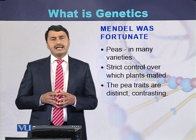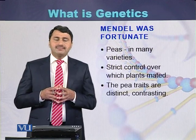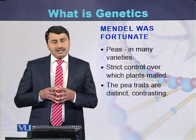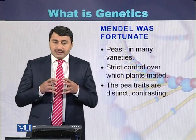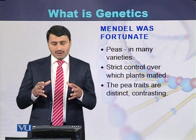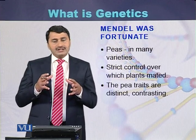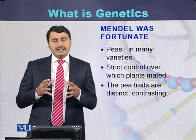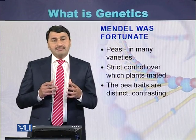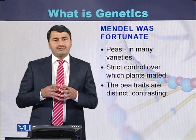It is said that Mendel was fortunate because he selected the garden pea as his experimental plant, as it was available in many varieties. When Mendel was performing his genetics experiments, he had strict control over the different plants he mated. The traits of the garden pea were clearly contrasting and clearly distinct from each other, which were the major properties that helped Mendel formulate the laws of heredity.